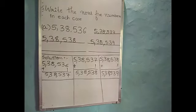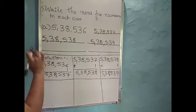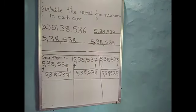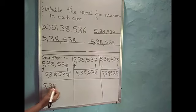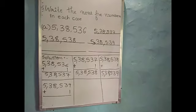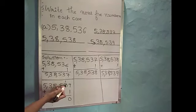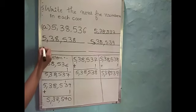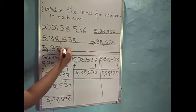We should add 1 to this number. So I will write here 5,38,539. After that we should add 1: 9 plus 1 is equal to 10. So I will write 1 carry here and 0 here. Then 1 plus 3 is 4, and write remaining numbers as it is: 5, 8, 3 and 5. So the next number is 5,38,540.